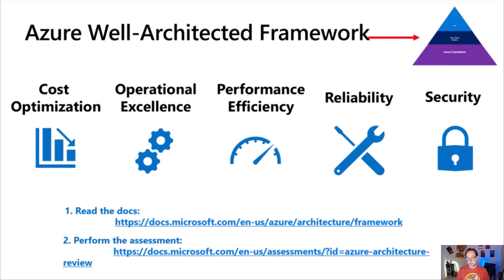The Azure Well-Architected Framework is a guidance blueprint coming from the Azure engineering teams — a specific team within Azure engineering focuses on it. Within the docs, you find reference architectures based on reference architectural designs, diagrams, Visio diagrams, Azure ARM templates, and Bicep templates for automated deployment. It primarily looks at optimizing five different pillars: cost optimization, operational excellence, performance efficiency, reliability — the biggest component in this context — and security.